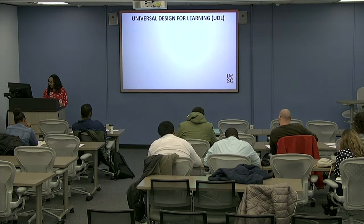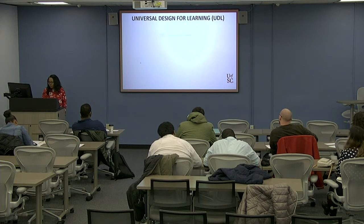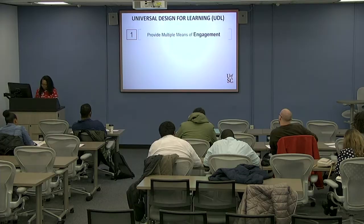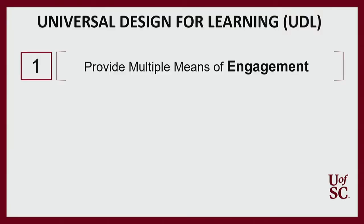Next is Universal Design for Learning, or UDL. UDL is basically about making your instruction, assessments, and activities varied — giving variety in what students are doing and how you present content to students. The first step in Universal Design is to provide multiple means of engagement.